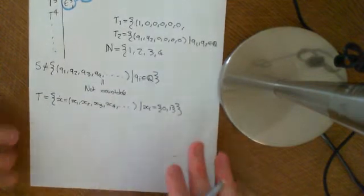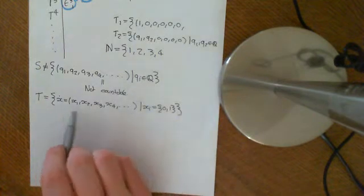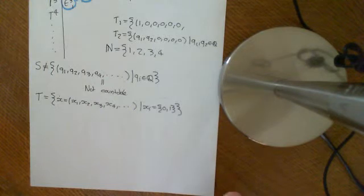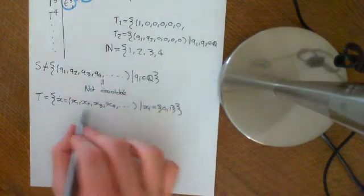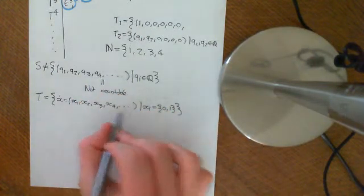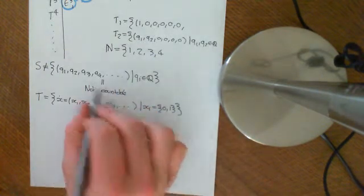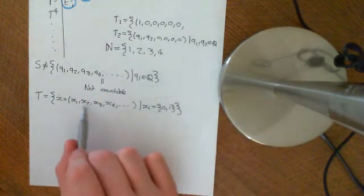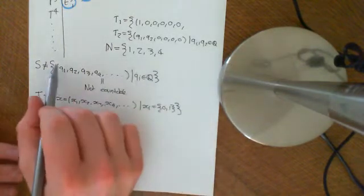And we saw that these were binary expansions for real numbers in the interval 0 to 1. And you could actually put them in bijection with the numbers in the interval 0 to 1. And that interval 0 to 1 is not countable, therefore this cannot be countable. And this is a subset of this, because 0 and 1 are certainly rational numbers. So any sequence in here, I can pick these rational numbers so that the overall sequence is the same. So this set cannot possibly be countable.